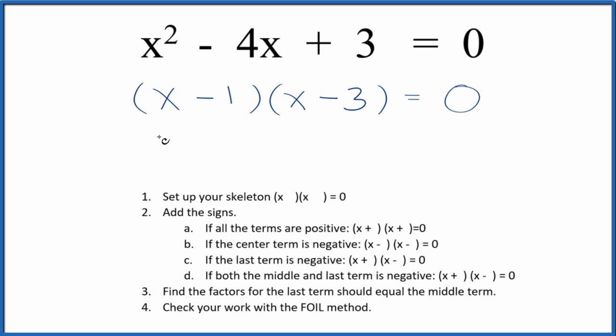To do that, we could say x minus 1 equals 0. So x would equal 1. x equals 3. So if you put 1 in for x and work this out, 1 squared minus 4 times 1 plus 3, that'll equal 0.